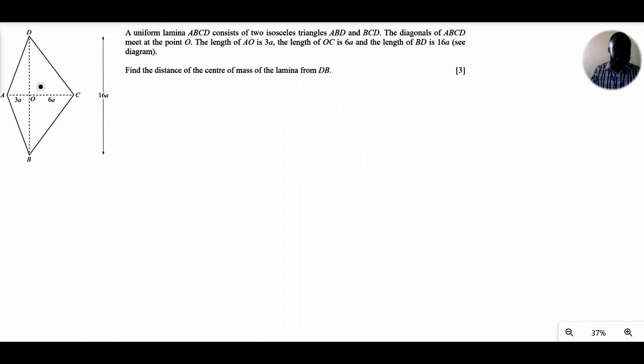Now if you look closely, the triangle BDC has the same base length—by base length I mean the length of BD—as the triangle BDA. So these two triangles have the same base length.